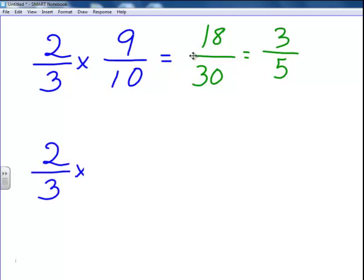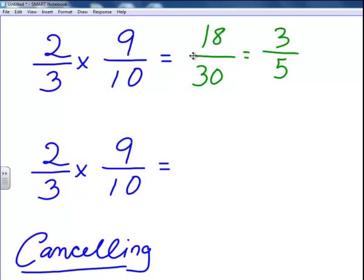It is also possible to use a method called cancelling. And what cancelling will do is let you sort of simplify the fraction before you do the multiplication, so you end up dealing with much smaller numbers. So by cancelling, I mean, first of all, you can look to see if there is a way to simplify the fractions themselves. So 2 thirds can't be simplified, and 9 tenths can't be simplified. That's not going to work for us, but we do want to look at the other method of cancelling.